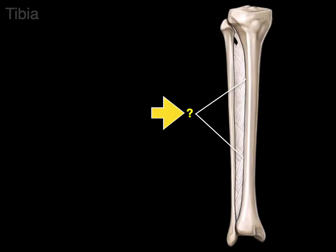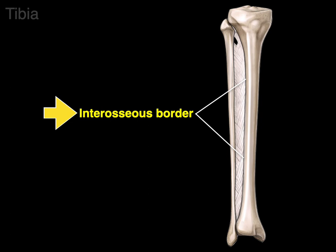On the lateral surface of the tibia is a crest called the interosseous border, which serves as an attachment for the interosseous membrane.